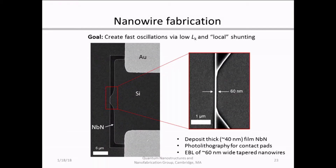In our case, we wanted to create fast oscillations through two approaches. First, we reduced the kinetic inductance compared to a typical SNSPD by eliminating the meander geometry and instead using a very simple geometry tapering into a nanowire with a minimum width of 60 nanometers. Additionally, we used a very thick film of niobium nitride — our superconducting material. Typically thin films are around 5 nanometers, but here we used a film about 40 nanometers thick in order to reduce the overall inductance per square of our device.